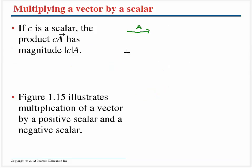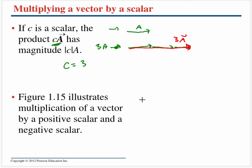We can also multiply vectors by scalars. Suppose I multiply vector a by a scalar c equal to 3. I would say that's 1a, that's 2a, that's 3a — so vector 3a is simply three times as long as vector a. If you multiply by a positive number it goes in the same direction; if you multiply by a negative number, such as –3, it reverses direction.